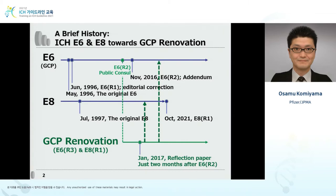In the mid to late 1990s, other important guidelines were agreed upon that brought not only common regulations but also a common way of thinking, such as the standard for the reporting of safety information, international terminology for drugs, the common non-technical document, bridging strategy, and the statistical principle for clinical trials. The ICH GCP has contributed greatly to ensuring the scientific and ethical nature of clinical trials conducted around the world.